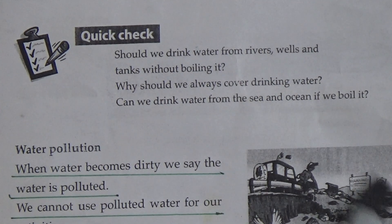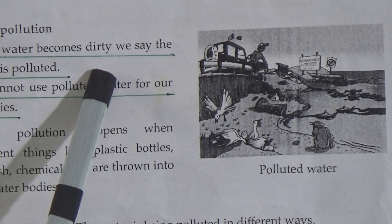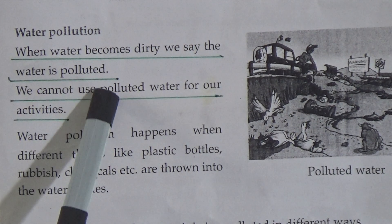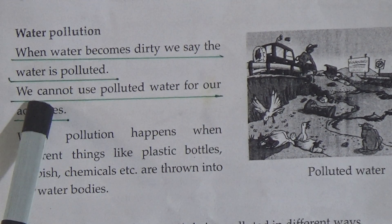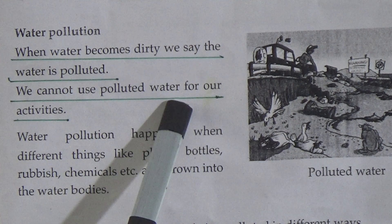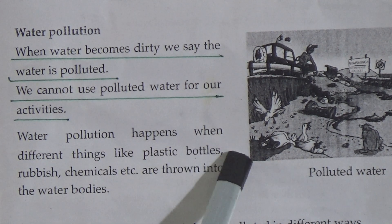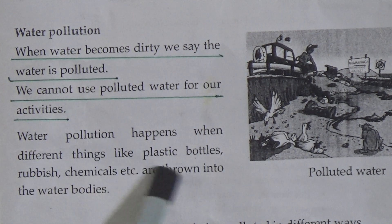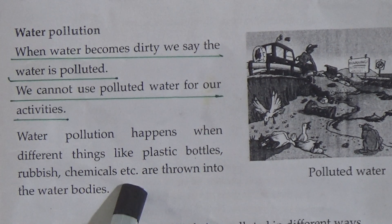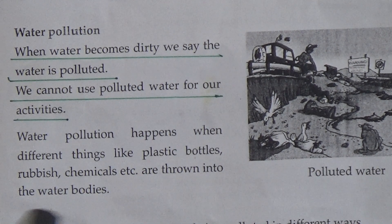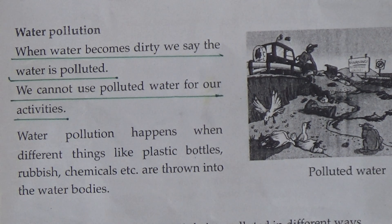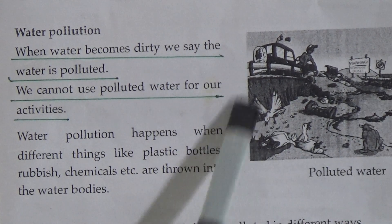Now our topic is water pollution. When water becomes dirty, we say the water is polluted — underline this line. We cannot use polluted water for our activities. Water pollution happens when different things like plastic bottles, rubbish, chemicals, etc. are thrown into the water. Look at the picture showing polluted water. Can you think of what can be done to keep water clean?